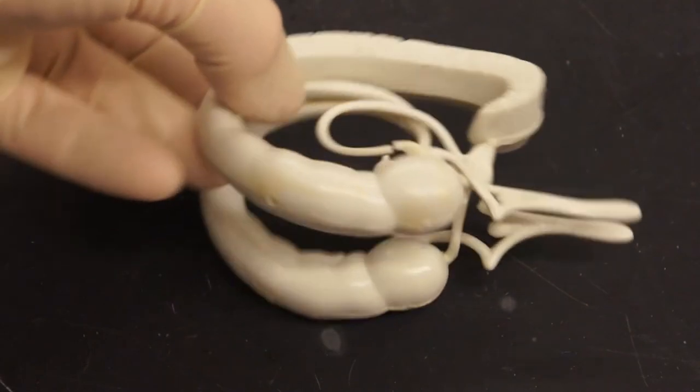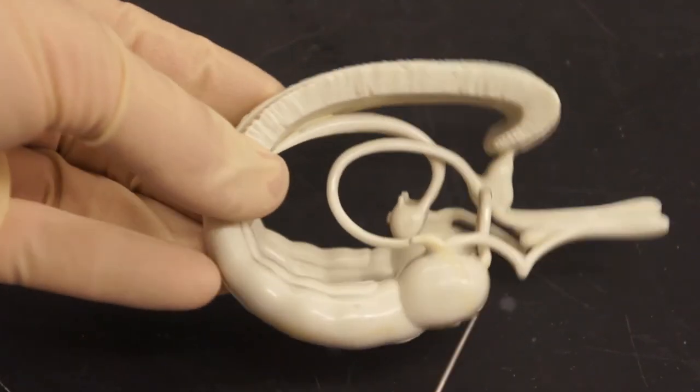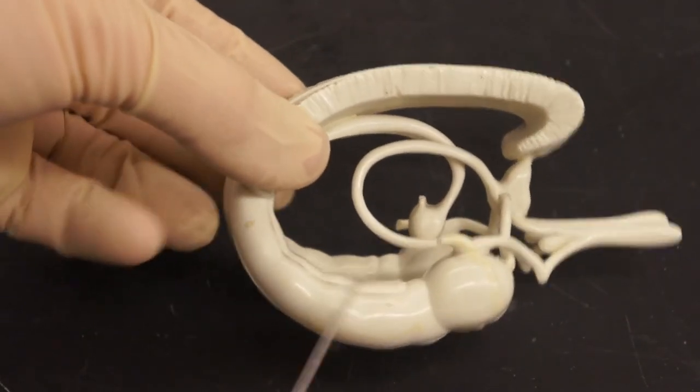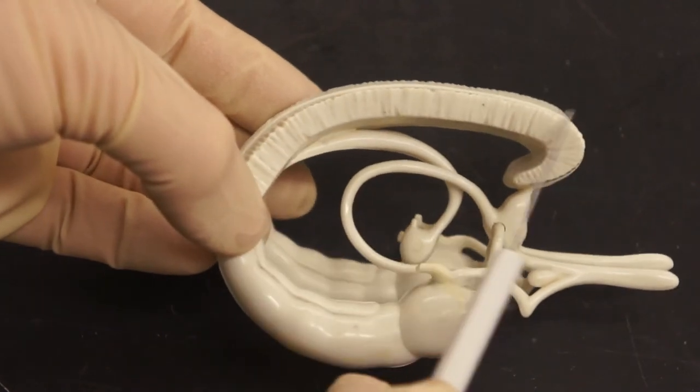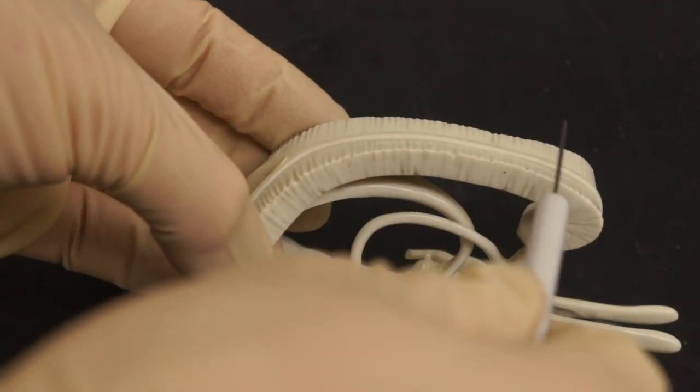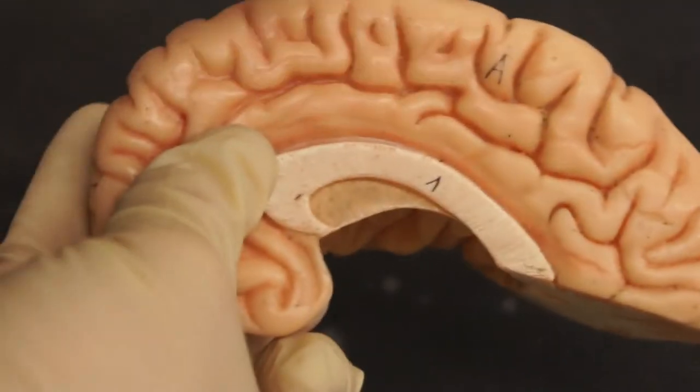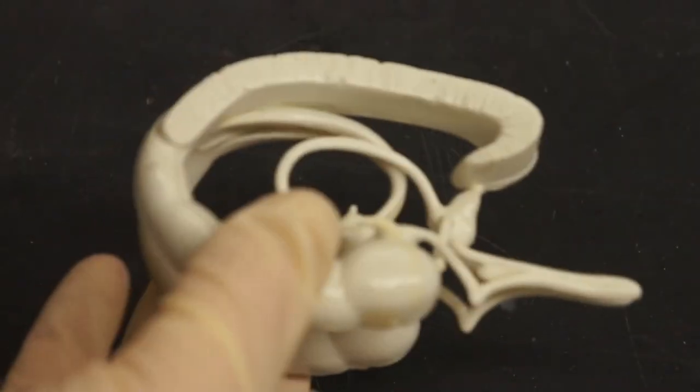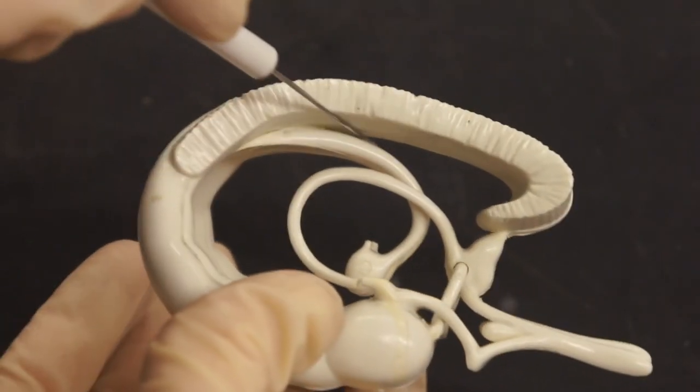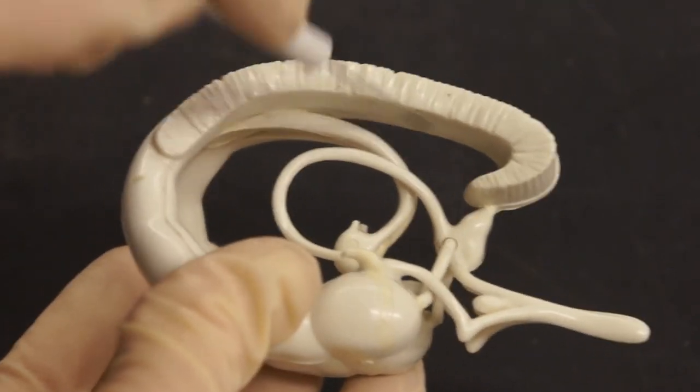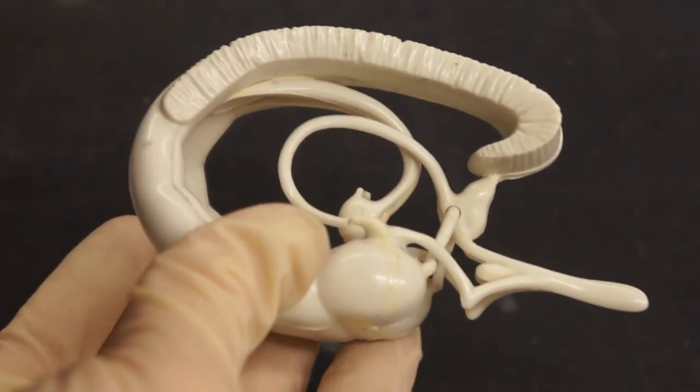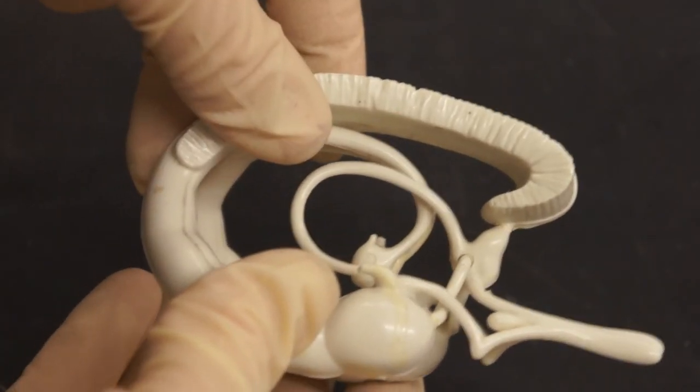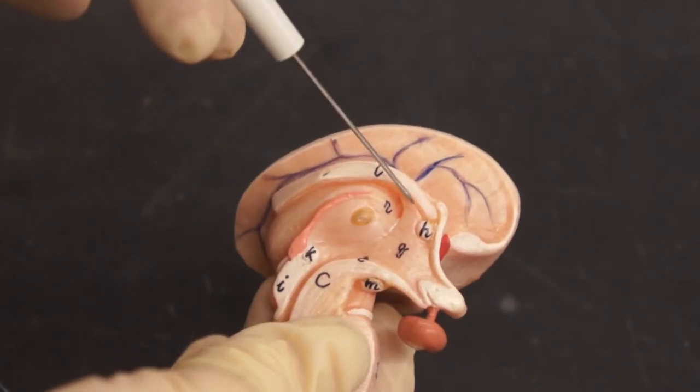Here we have a model of the limbic system. Down here we have the amygdala, continuous with the hippocampus. This next to the corpus callosum, on top of which we would find the cingulate gyrus. On this model we can see the cingulate gyrus right here, just above the corpus callosum. Then we have the fornix, connecting to the mammillary bodies. We can see the fornix on the brainstem model, right here.